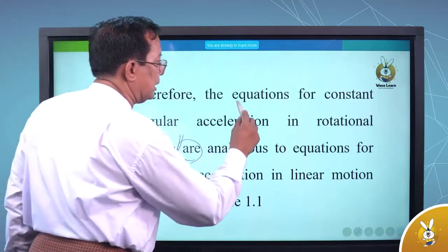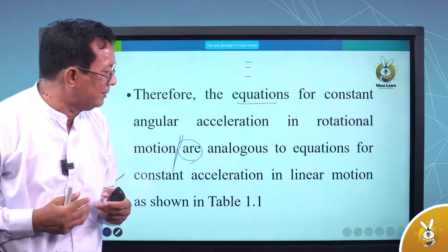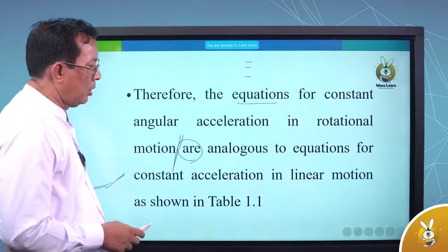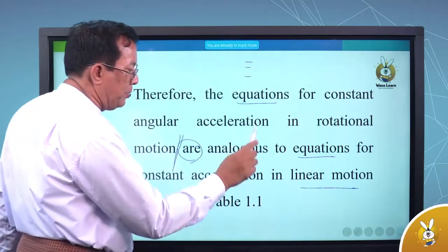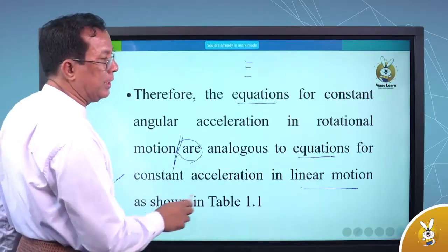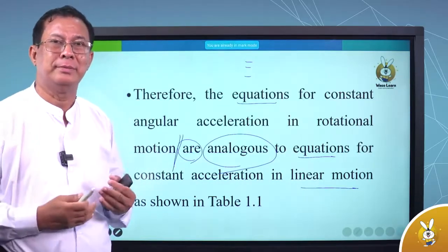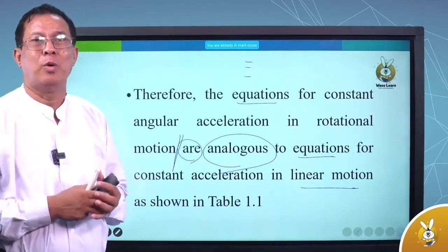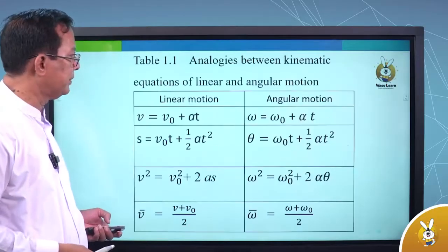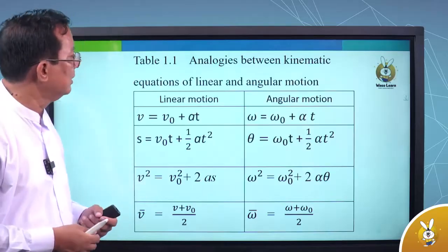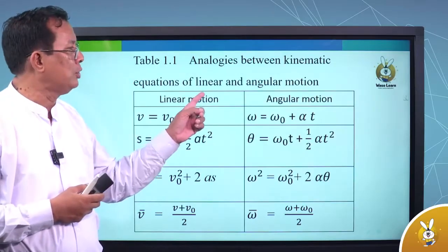Because you can write it in the same way. Analogic — analogic is the same. Analogic equation for the constant acceleration of the linear motion — the equation is the same. Analogic equation is the same. You can write it in the same way.